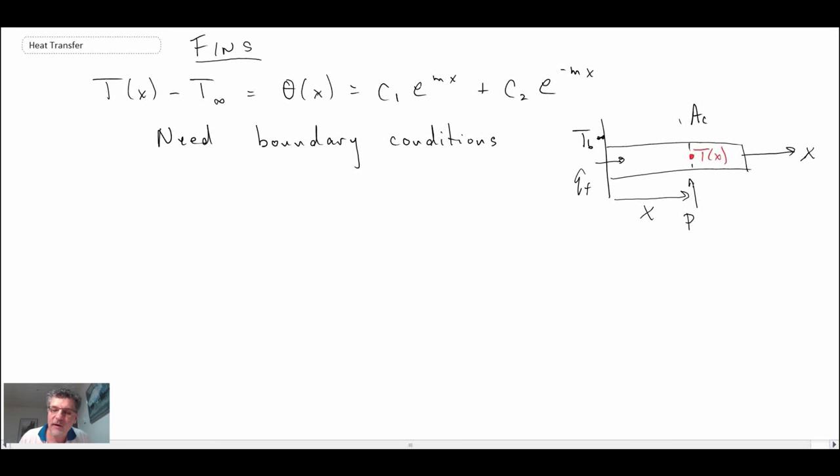So we need the boundary conditions. We're going to assume three idealized cases. I won't go through all the math, but I'll give you the results of each of the cases—the solution, determining what the boundary conditions would be, and then determining what the constants of integration would be, the C1 and C2. So we're going to take a look at three cases.